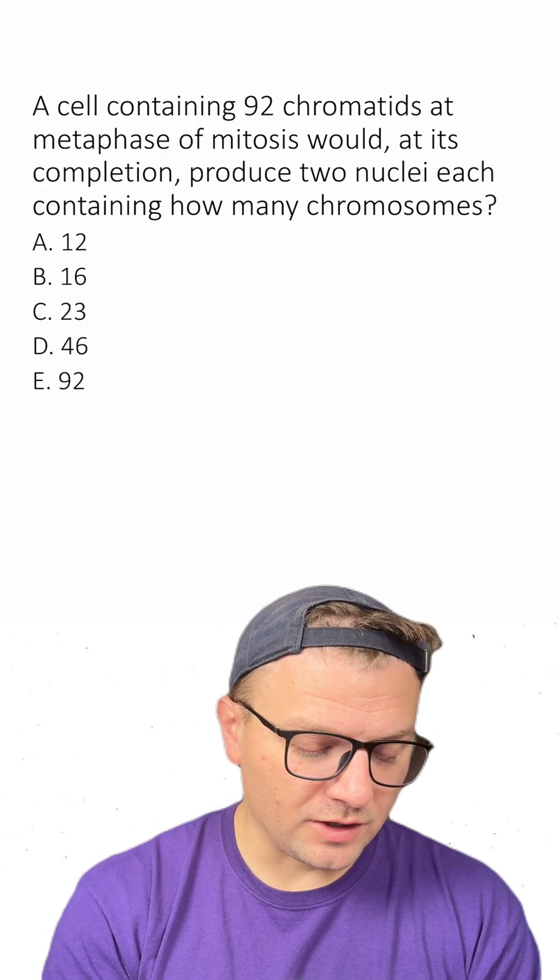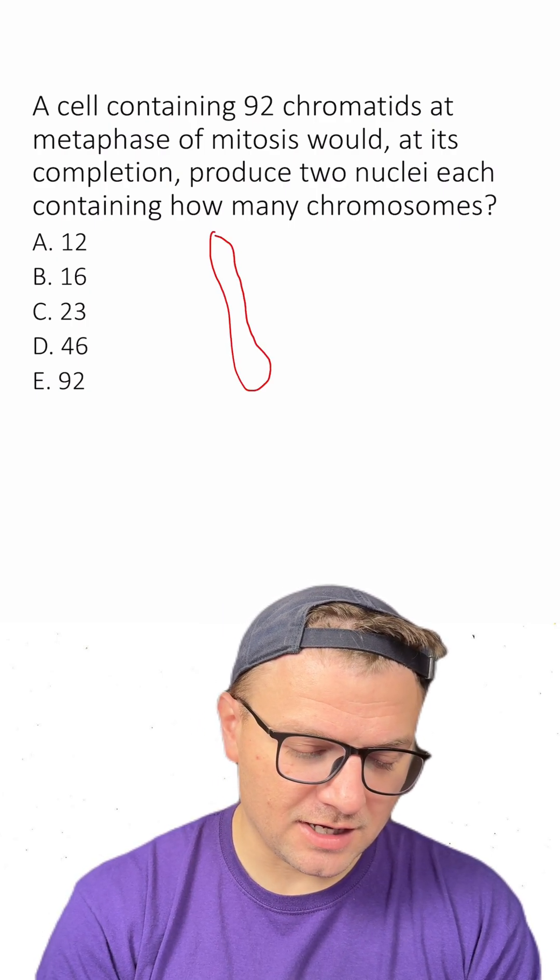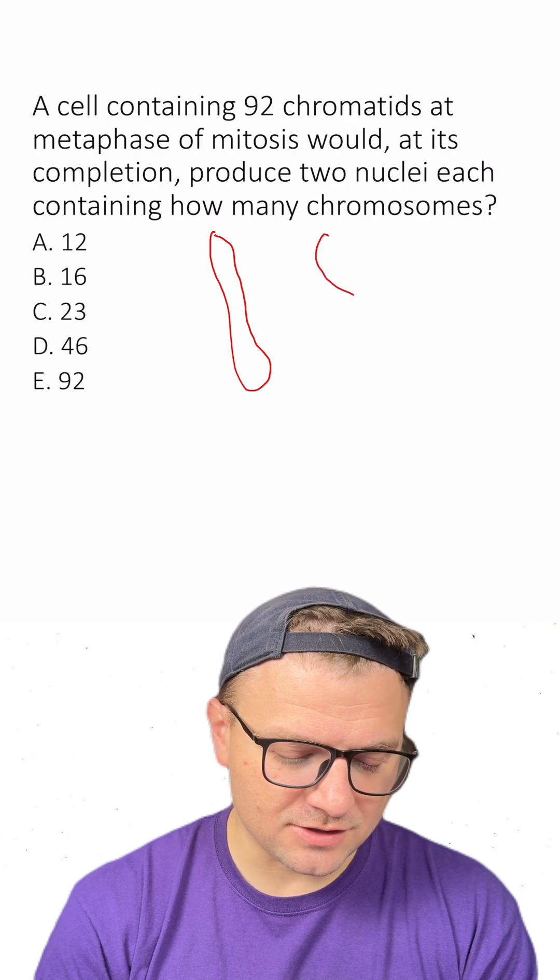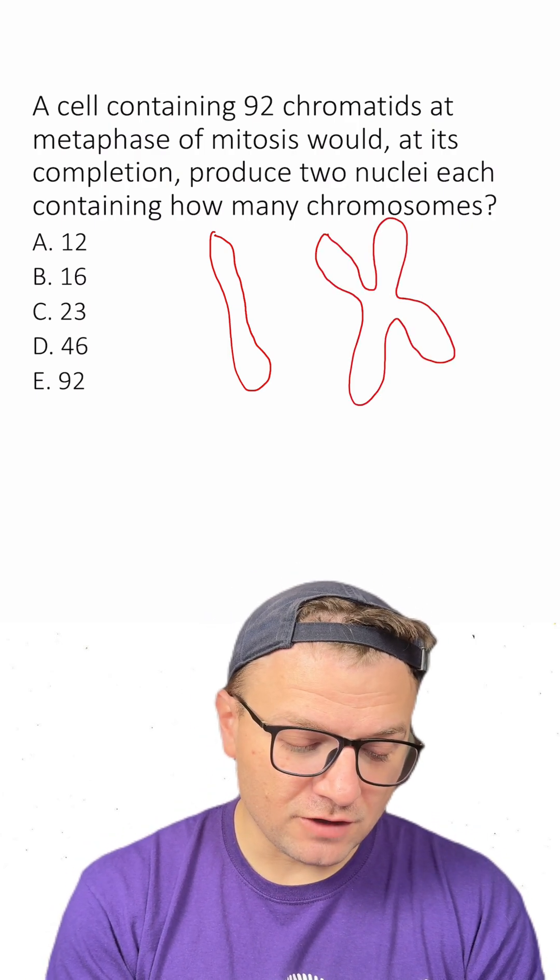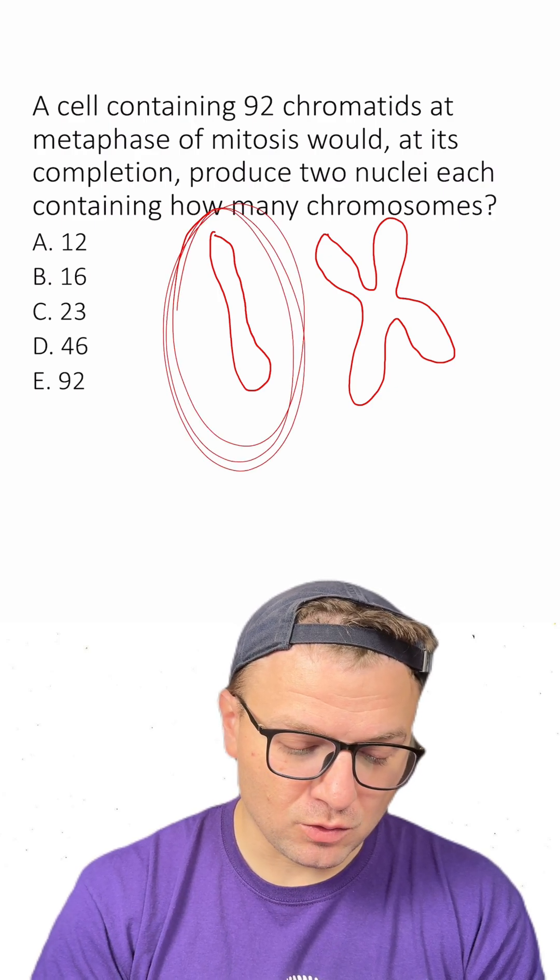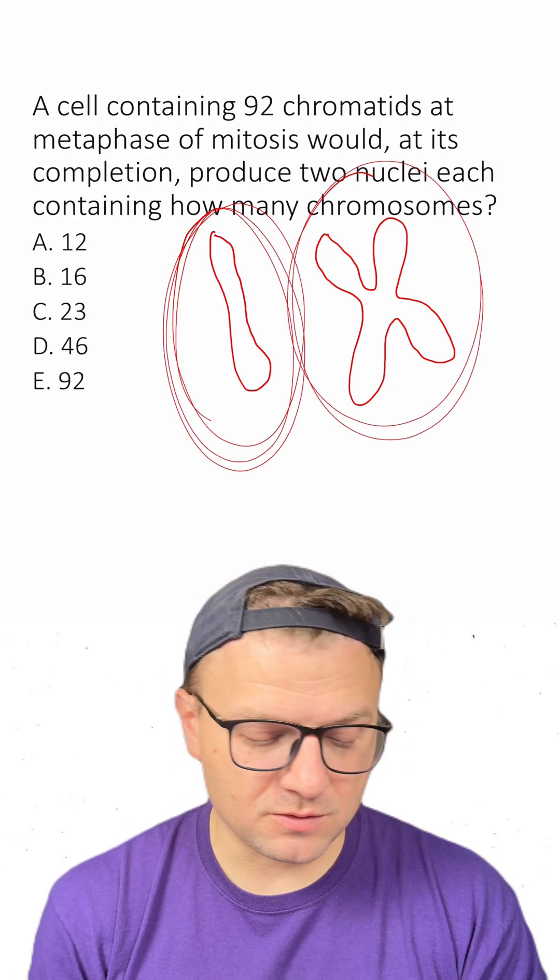So a chromosome that only has one chromatid might look like this, while a chromosome that has two chromatids might look like this. Each of these structures, this one and this one, are both called chromosomes.